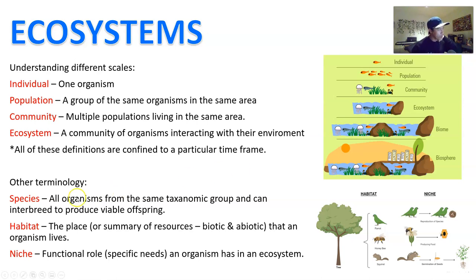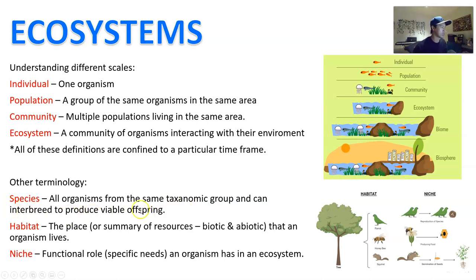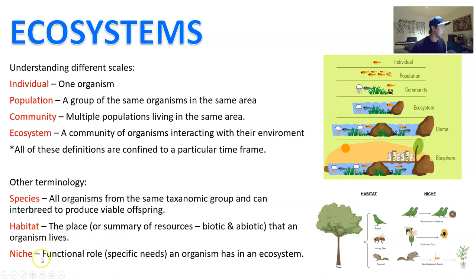The word 'species' refers to all organisms from the same taxonomic group, and in its basic definition, organisms that can interbreed and produce viable offspring — though there are a few complicated cases like hybrids. The habitat is, officially speaking, the summary of resources, both biotic and abiotic, that an organism lives in. And then this particular term, a niche, refers to the functional role or the specific needs that that organism has in that particular environment.